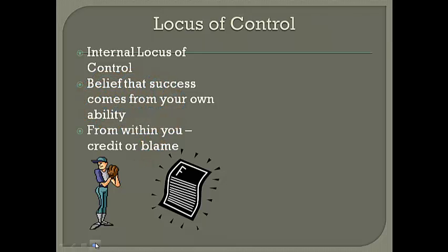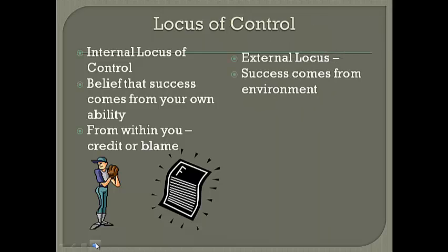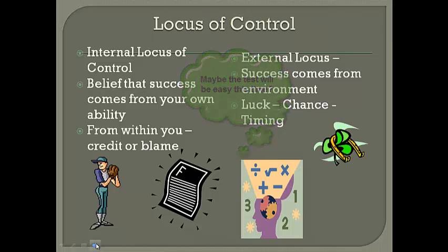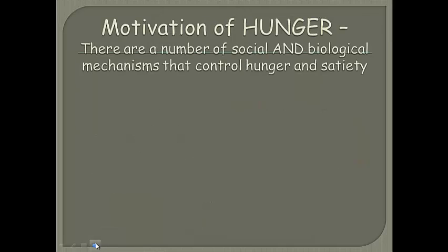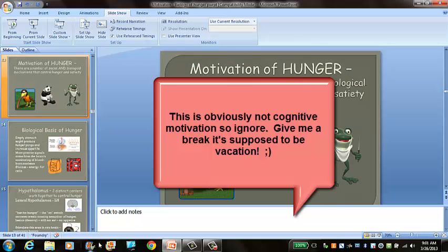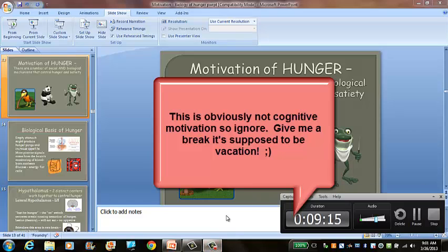People with an external locus of control tend to believe that success is determined outside of them — it's luck, a lucky break, or being in the right place at the right time. When trying to do a math problem, they might wonder if they'll just get lucky on the test. Before we move on to hunger, we'll stop there. Hopefully you'll rewind if you need to, and don't forget to bring your notes and review. We'll talk soon about hunger motivation next.